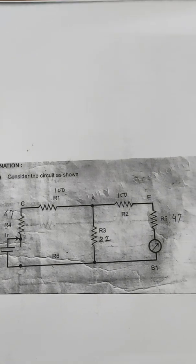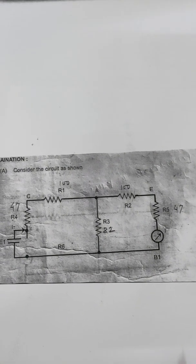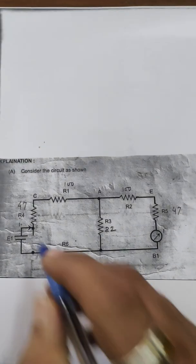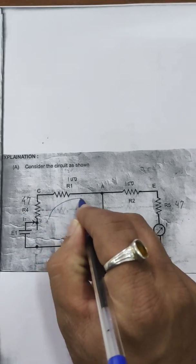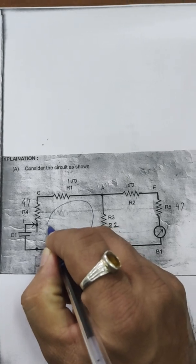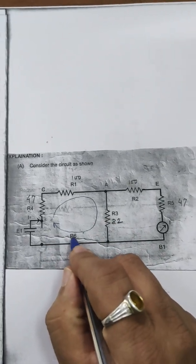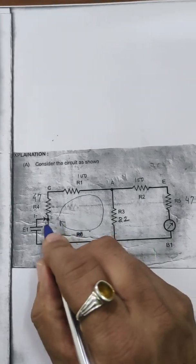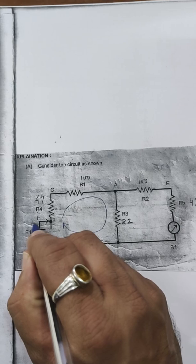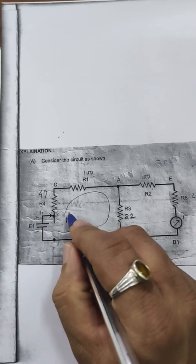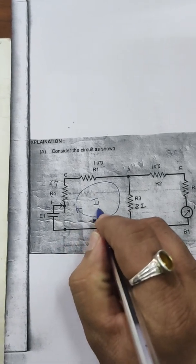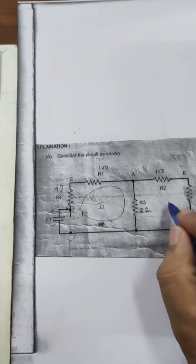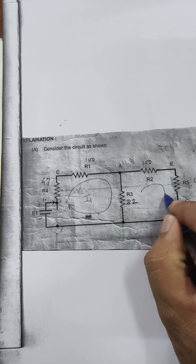Now let us verify the reciprocity theorem theoretically. I am considering this simple network — the same circuit which we have in the kit. To solve this circuit, I apply Kirchhoff's voltage law, that is mesh analysis. We don't have R6 here so I just remove it. Based on the supply source — positive upward and negative downward — the current starts from the positive terminal and ends at the negative terminal, and we call it I1.